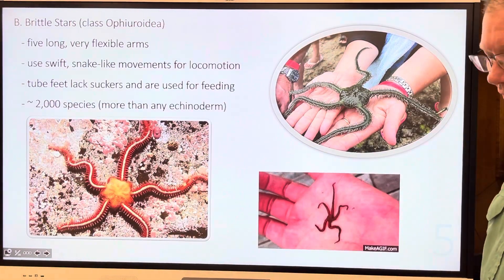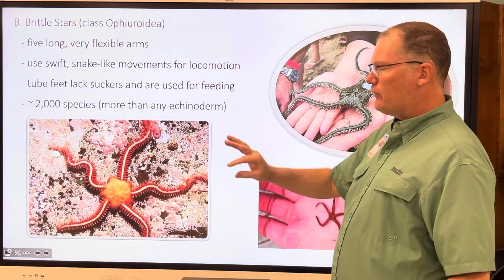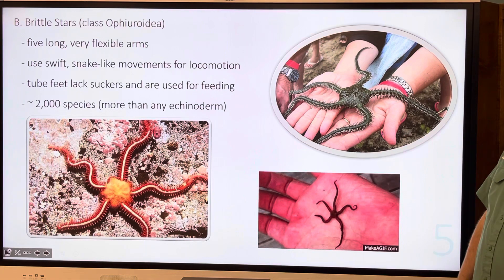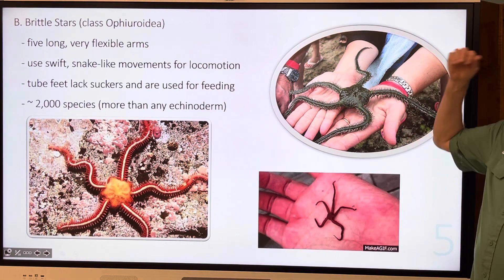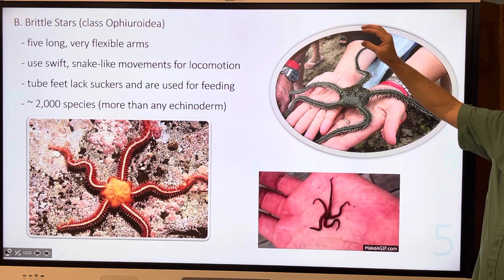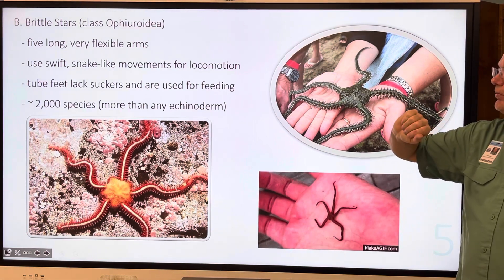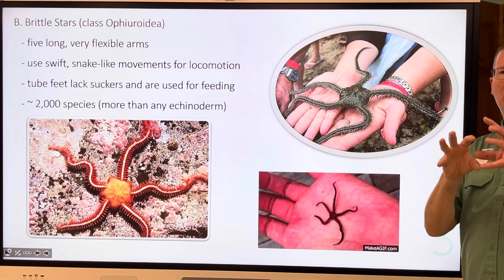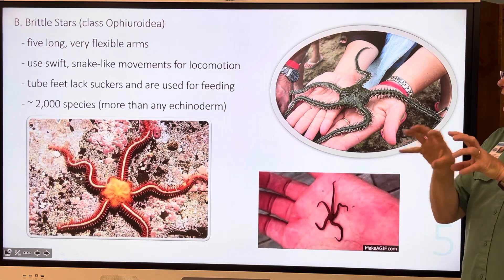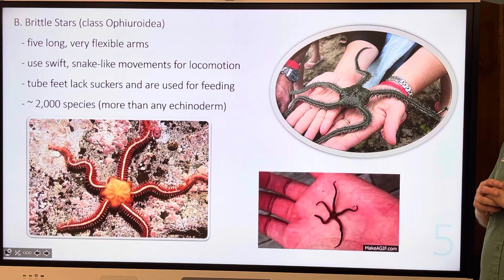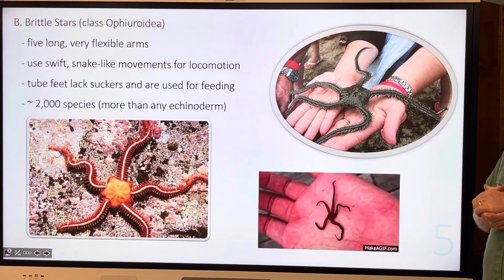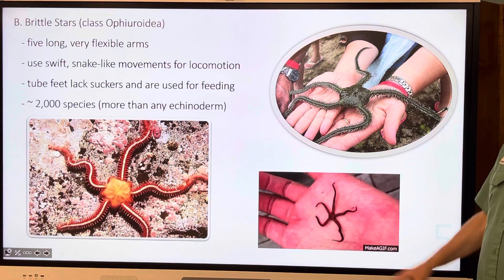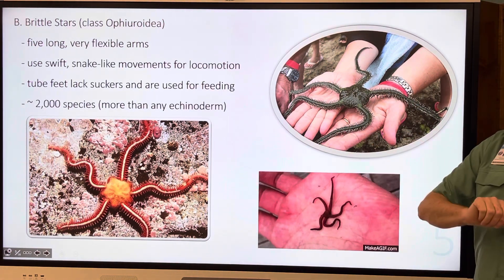Brittle stars — we have lots of these here as well. They have five long, flexible, snake-like arms, as you can see them wriggling around. They come in all different sizes. They have tube feet, but the tube feet don't have suckers on them — they're just used for feeding. There are approximately 2,000 species of brittle stars, more than any other echinoderm.